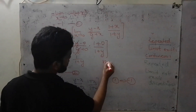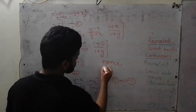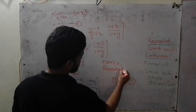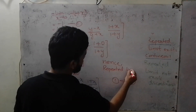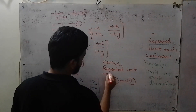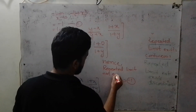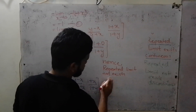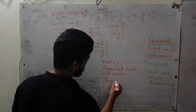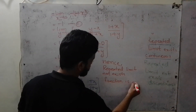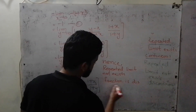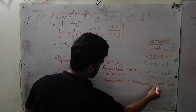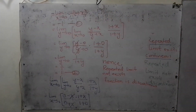The first value is −1 and the second value is +1. Since they are not equal, the repeated limit does not exist and the function is discontinuous.